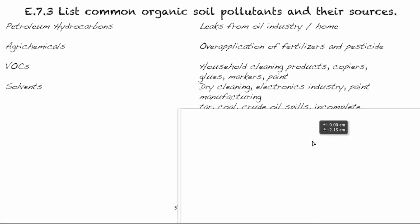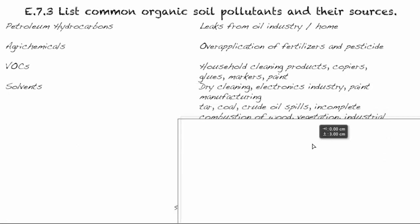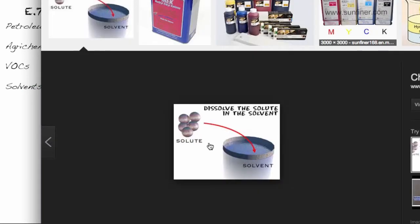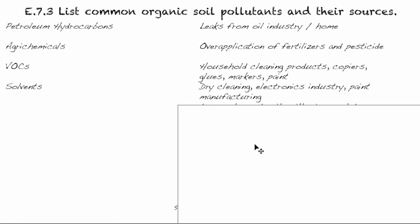Solvents — a solvent is what you dissolve a solute in. Certain products require mixing different chemicals together so they won't separate into layers, and solvents help do that. When making paint, for example, solvents prevent it from separating into layers. The electronics industry and dry cleaning are also sources.